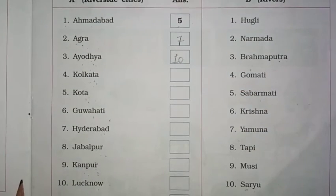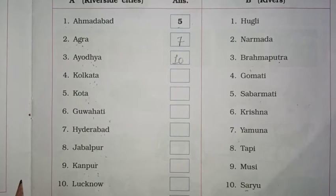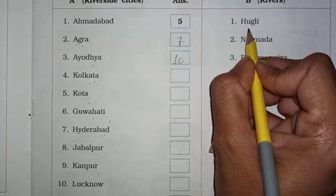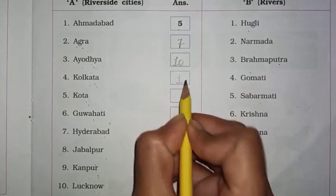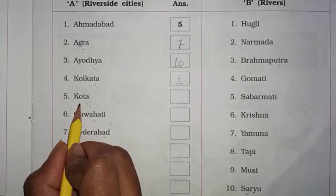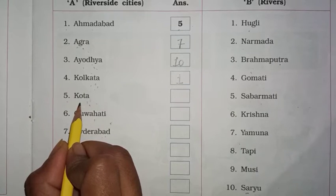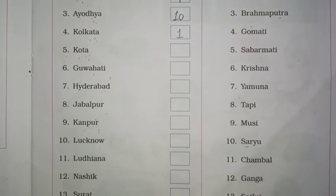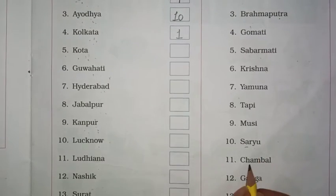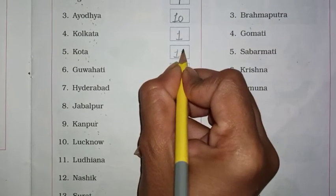Then 4, Kolkata — कहाँ पे आया हुआ है — Hooghly. तो यहाँ पे हमें 1 number लिखना है। Then 5, Kota — कौन सी river के पास आया हुआ है — चम्बल, 11 number में देखो। तो यहाँ पे हमें 11 लिखना है।